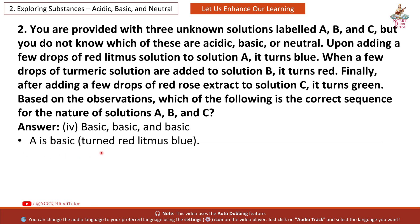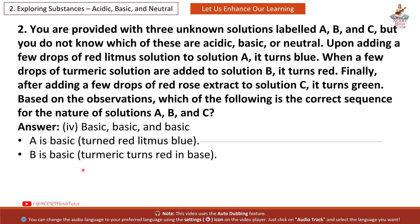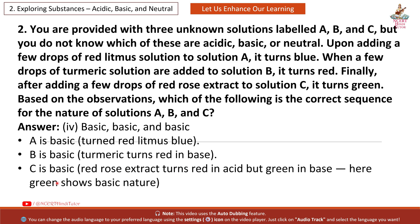A is Basic — it turned red litmus blue. B is Basic — turmeric turns red in a base. C is Basic — red rose extract paper turns red in acid but green in base. Here, green shows basic nature.